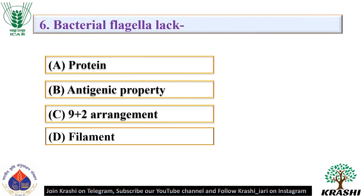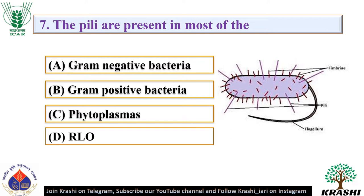Question number 6: Bacterial flagella lack — they lack the 9 plus 2 arrangement. Question number 7: The pili are present in most of the — they are present in gram-negative bacteria. They serve to connect two cells during conjugation and allow DNA to pass from donor to recipient cell.